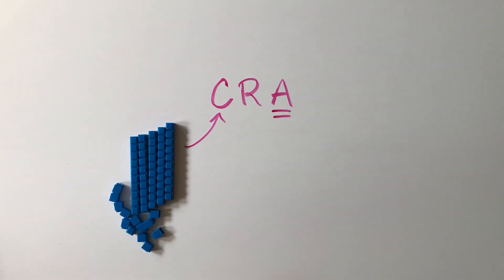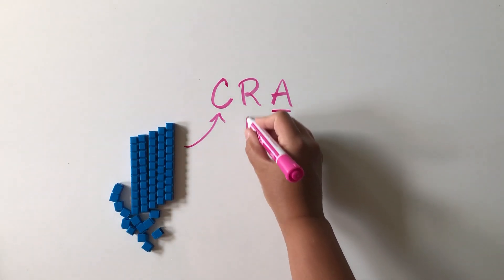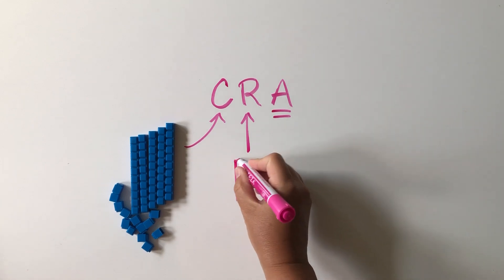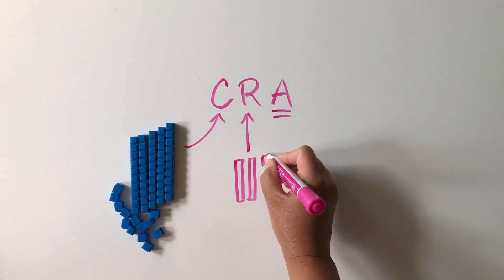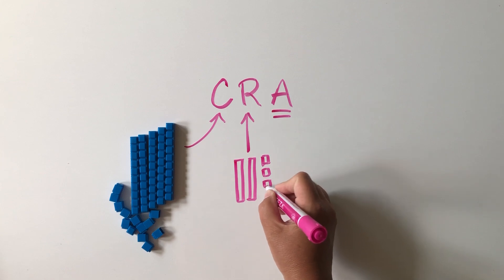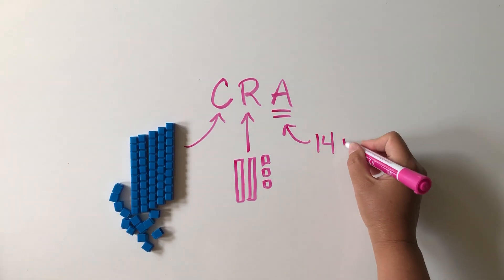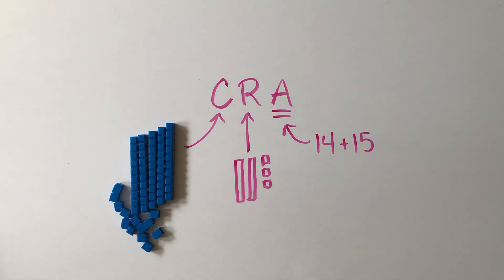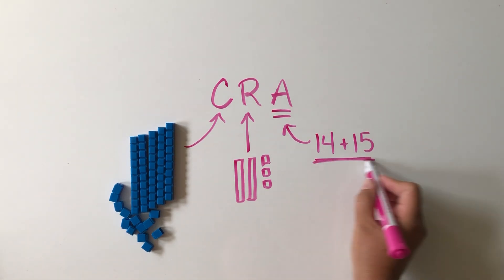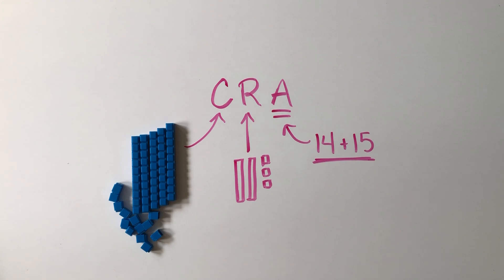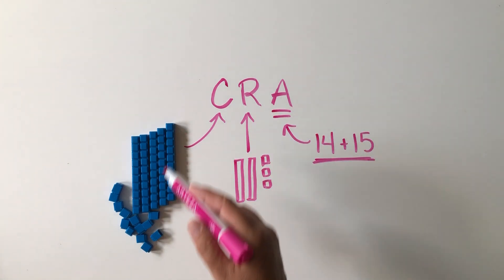The representational stage is when we draw pictures of those concrete materials or other representations. For example, we could draw base ten blocks when working in the representational phase. The abstract is when we simply work with the numbers and symbols. We don't want to start here.